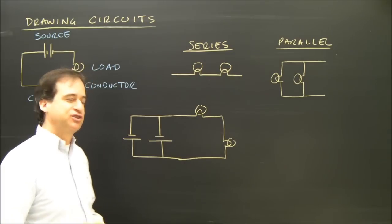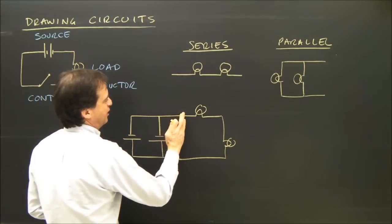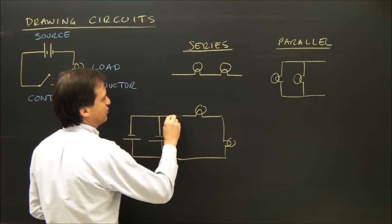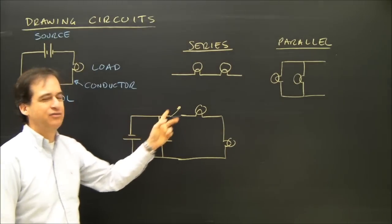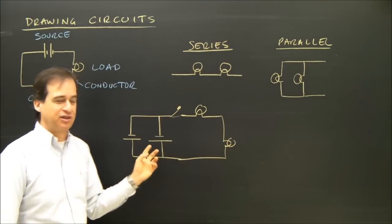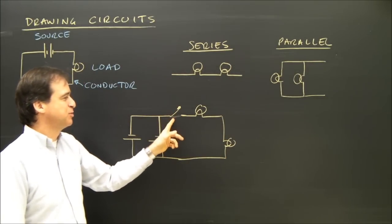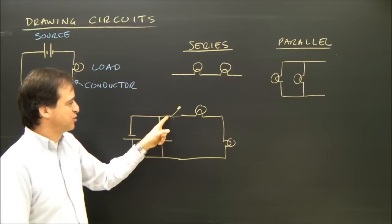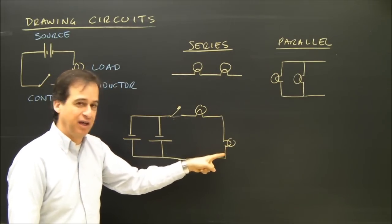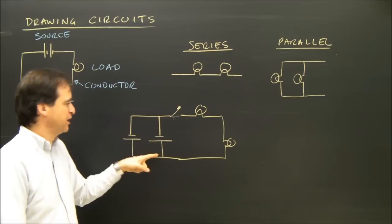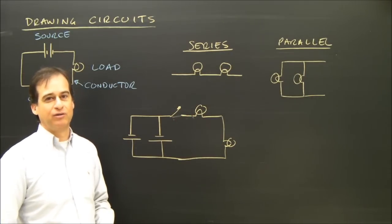And it says add a switch to turn them on and off. If I add a switch here — and we always draw the switch open, even though we're talking about a circuit that when it's closed, electricity flows — if I put a switch here, electricity can't get from this side to this side, so it can't go through the bulb, can't go through this bulb, can't go back. So both these bulbs go off.